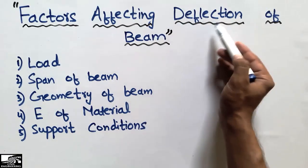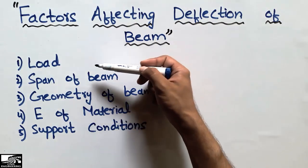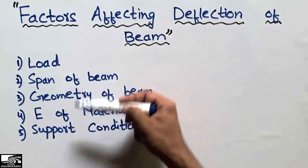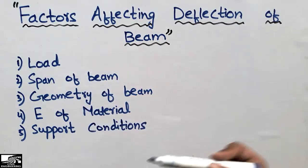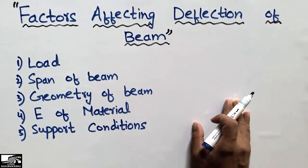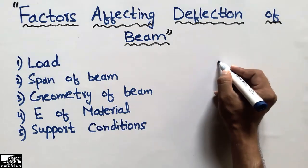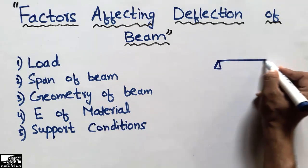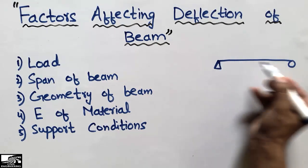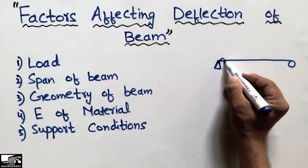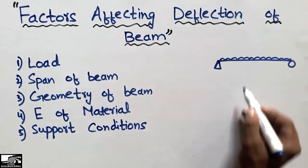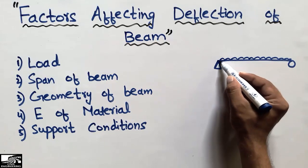There are five factors which affect the deflection of the beam, and I will discuss them one by one in detail. To explain this, I will take a simple example of a simply supported beam — a beam having a hinge and a roller support — with a uniformly distributed load acting on it. Upon loading, this beam will show deflection.